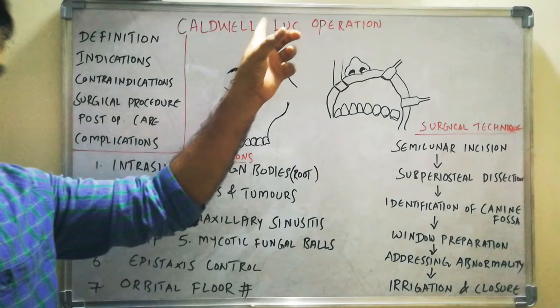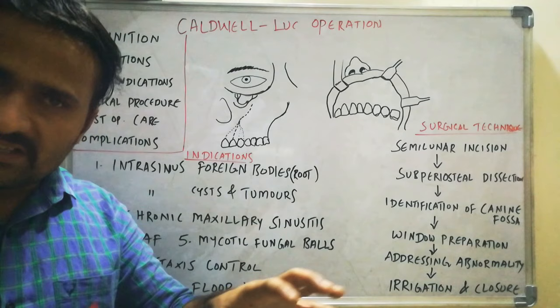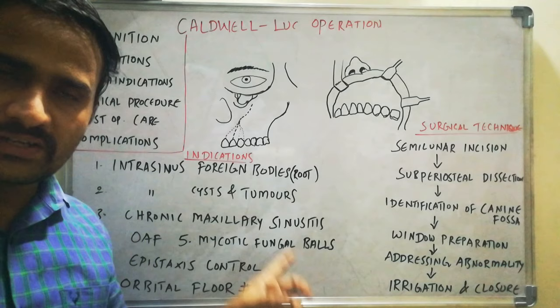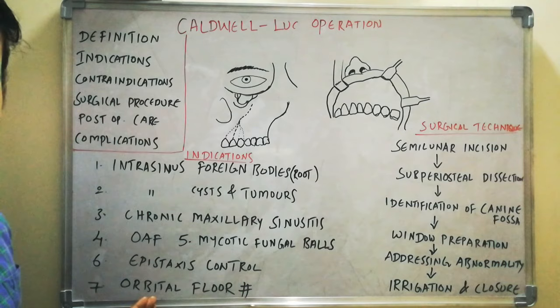Additional indications include Mycotic Fungal Balls — that is, fungal infection involving the Maxillary Sinus — and Epistaxis control, where you may pack the Maxillary Sinus so that bleeding is controlled. Finally, for Orbital Floor Fractures, Antral Packing can be done with the help of the Caldwell-Luc operation. So these are the seven indications of the Caldwell-Luc operation.